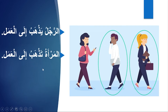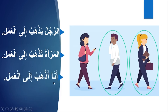What about you? If you are speaking about yourself you should say أنا. أنا أذهب — you should use أ. أنا أذهب إلى العمل — 'I go to work.'